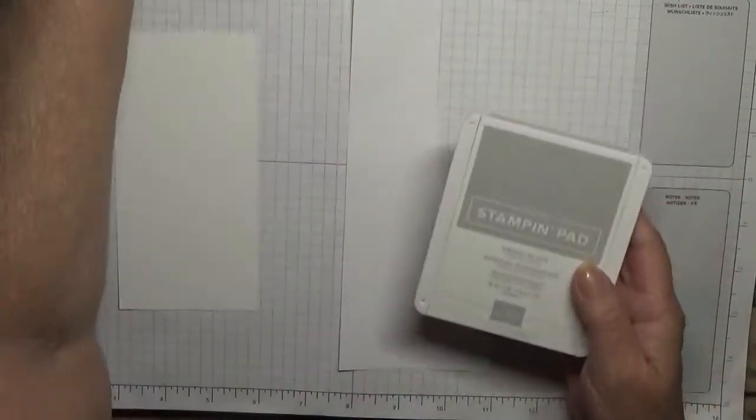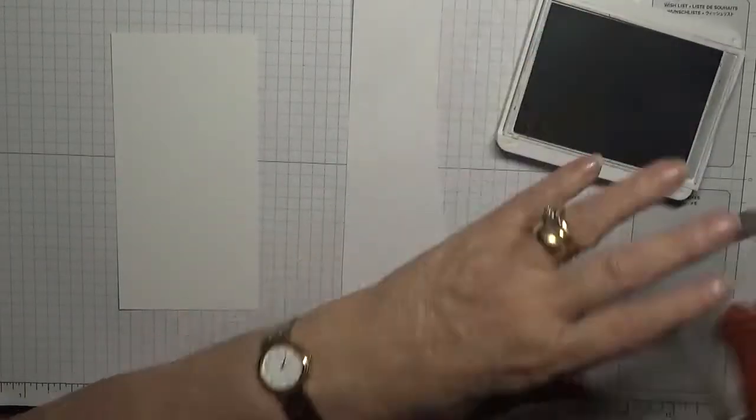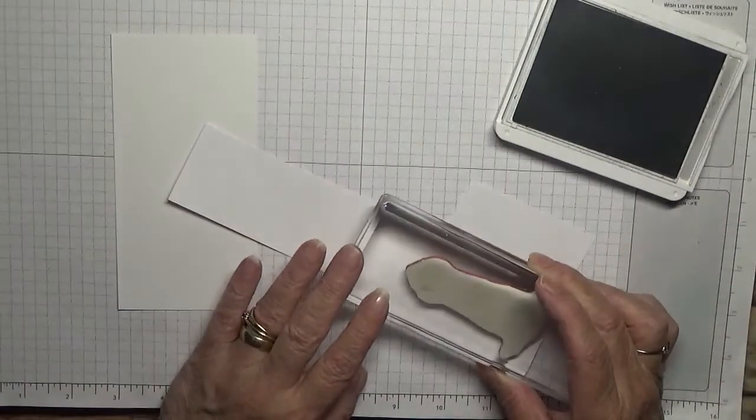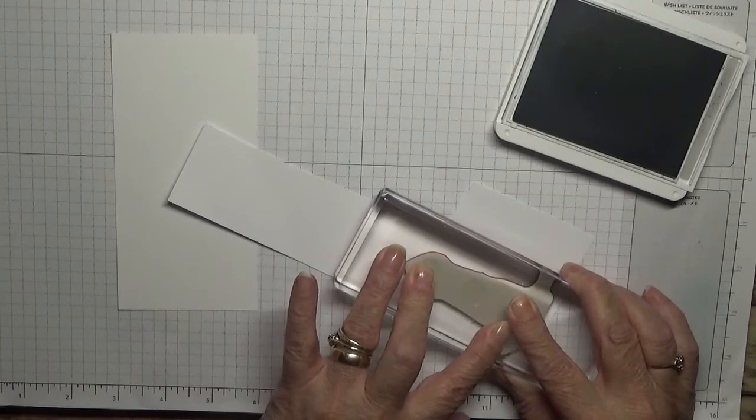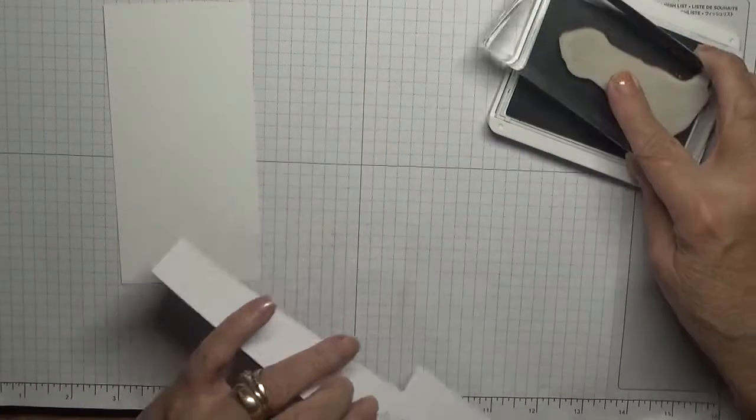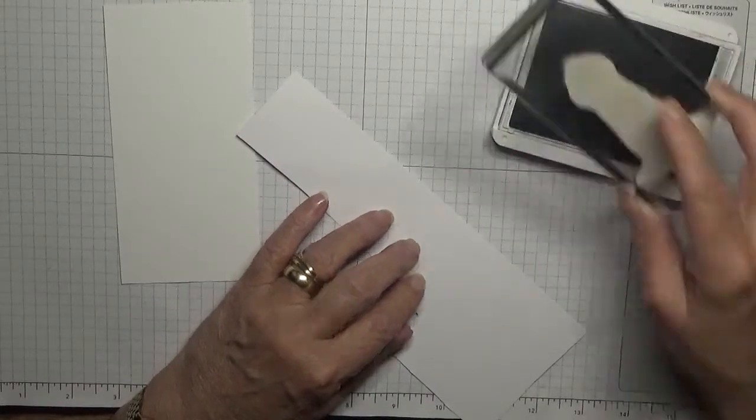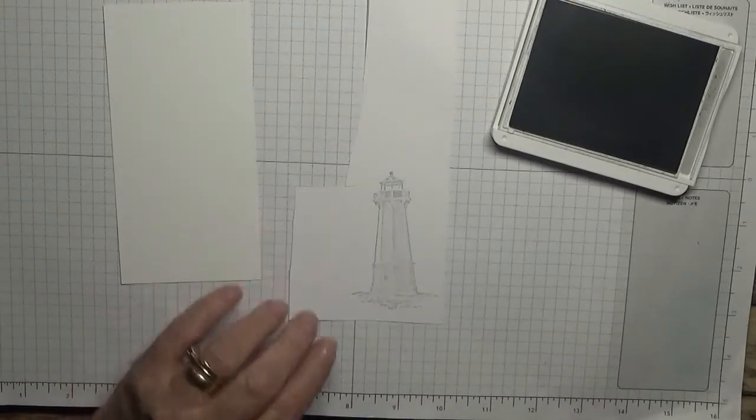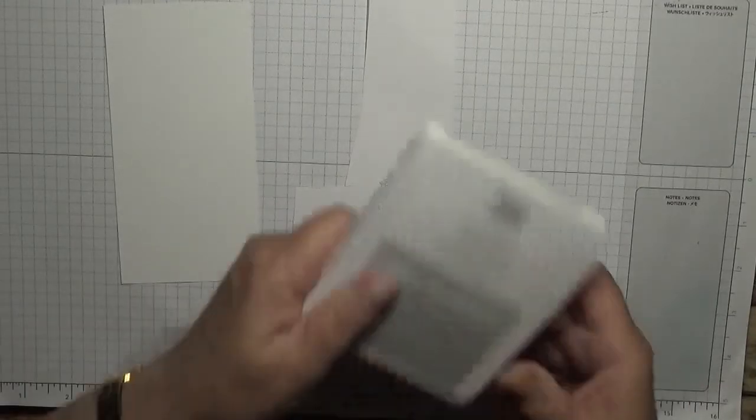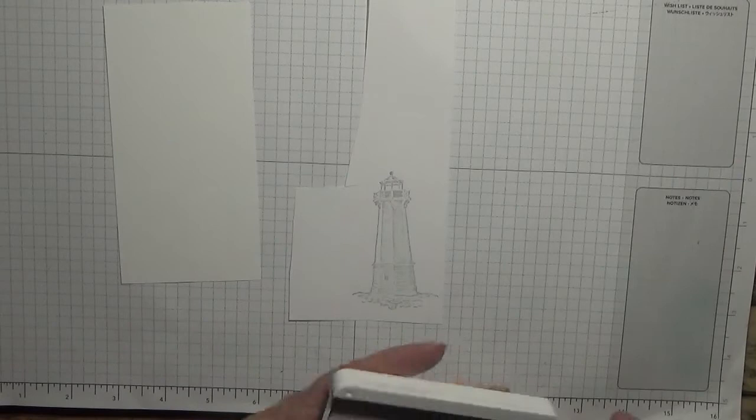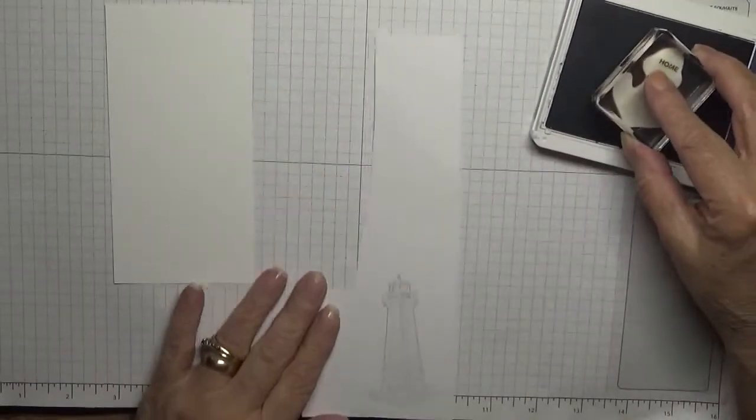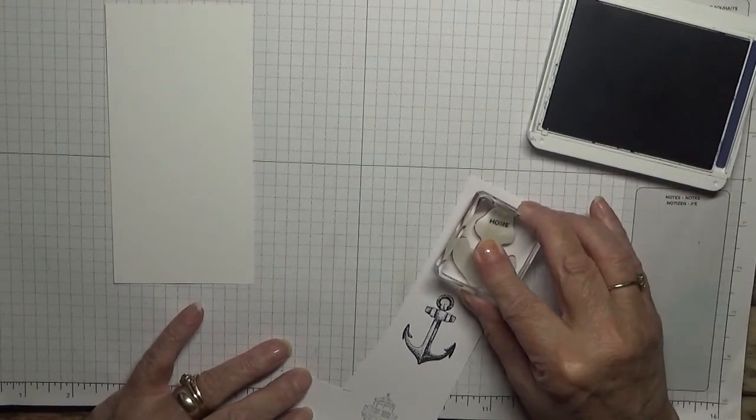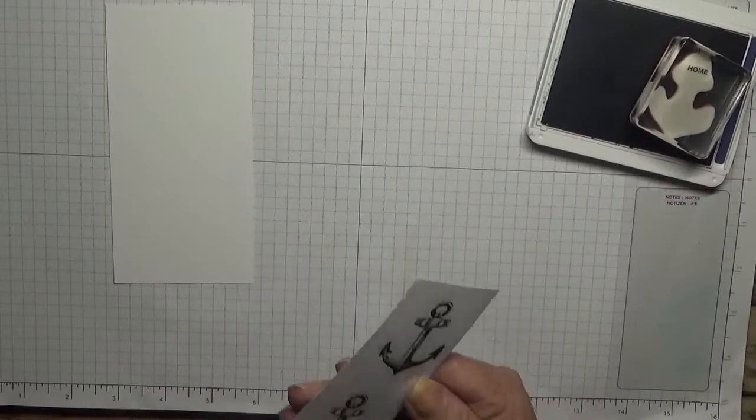I'm using Smoky Slate for the anchor. Ink it up and stamp it down. It's not very dark. And then I want Night of Navy for the anchor. My inks are drying out.